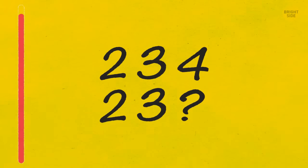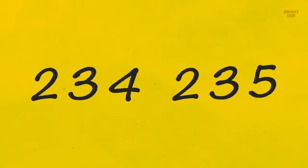Which number's missing? 2, 3, 4, 2, 3. Nope, it's not 4. The missing number is 5. You need to get subsequent 234 and 235.